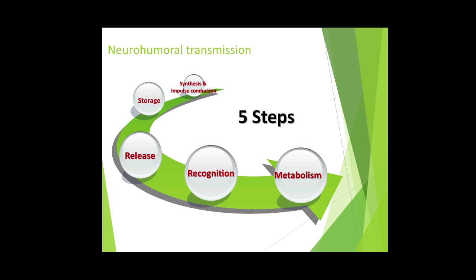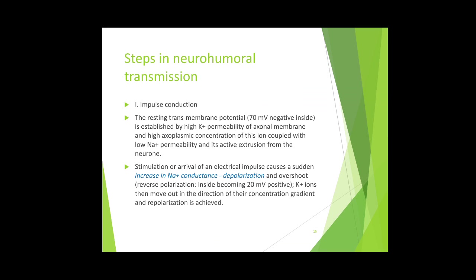Neurohumoral transmission refers to the transmission of nerve signals. There are five major steps: first, synthesis of neurotransmitter and impulse conduction; second, storage of the neurotransmitter in the presynaptic terminal; third, release of the neurotransmitter into the synapse or synaptic cleft; fourth, recognition of the neurotransmitter by receptors on the post-synaptic terminal; and fifth, metabolism of the neurotransmitter.